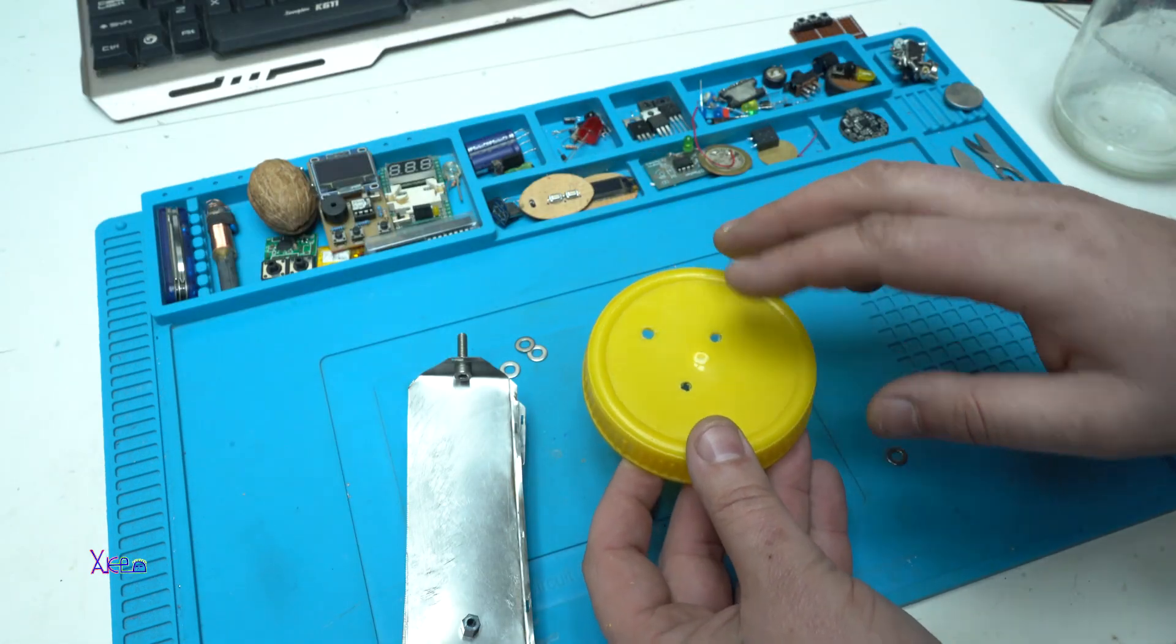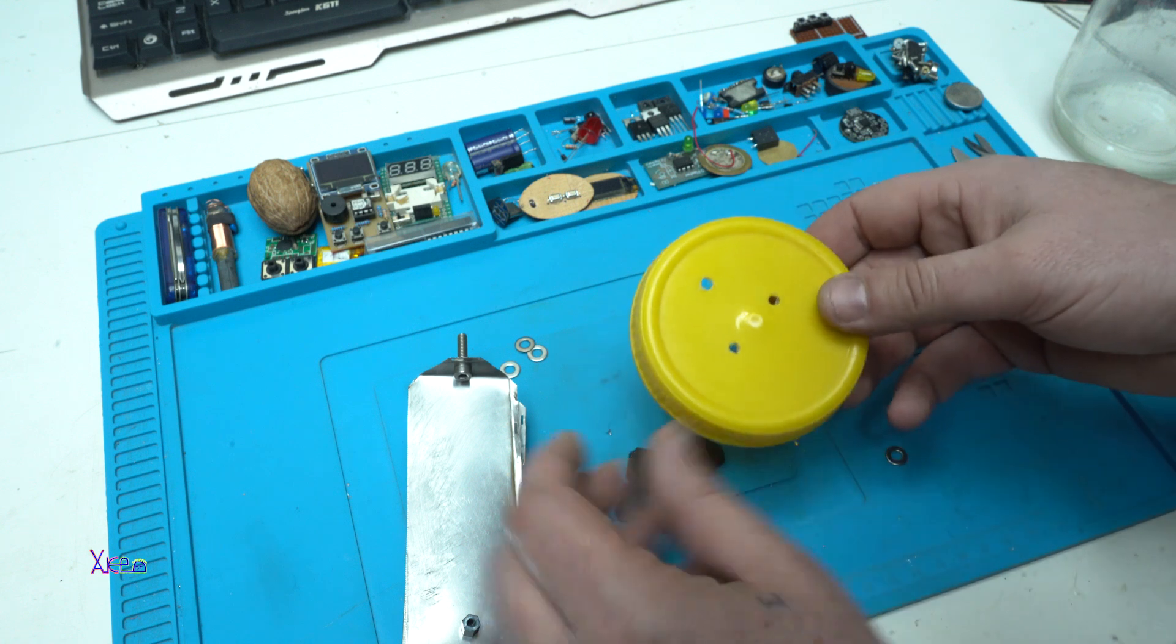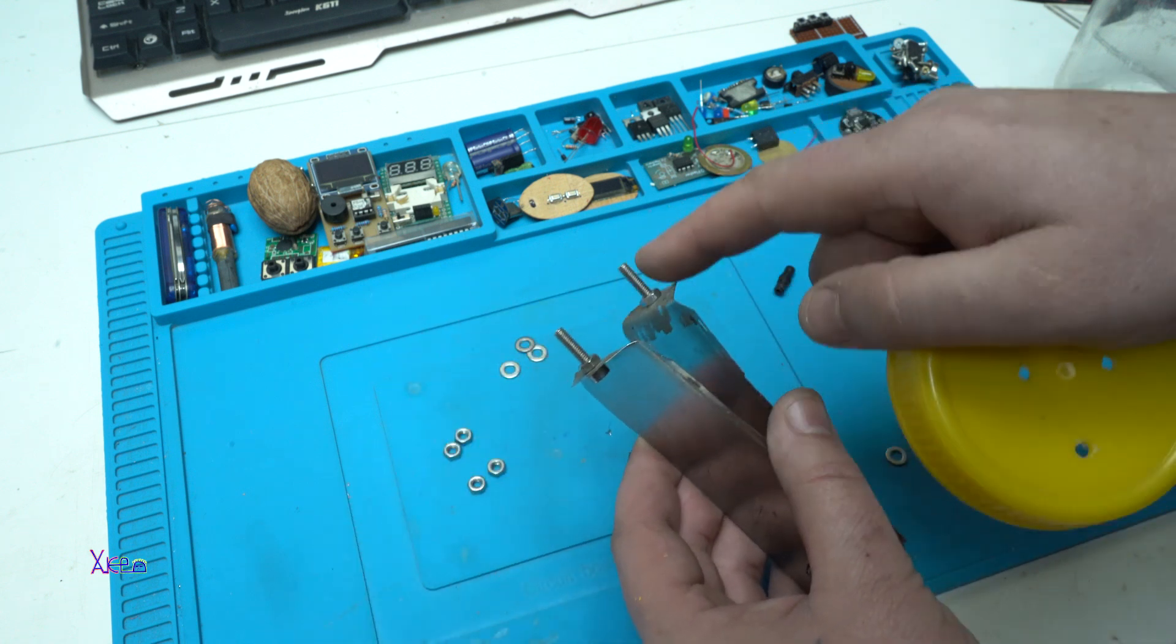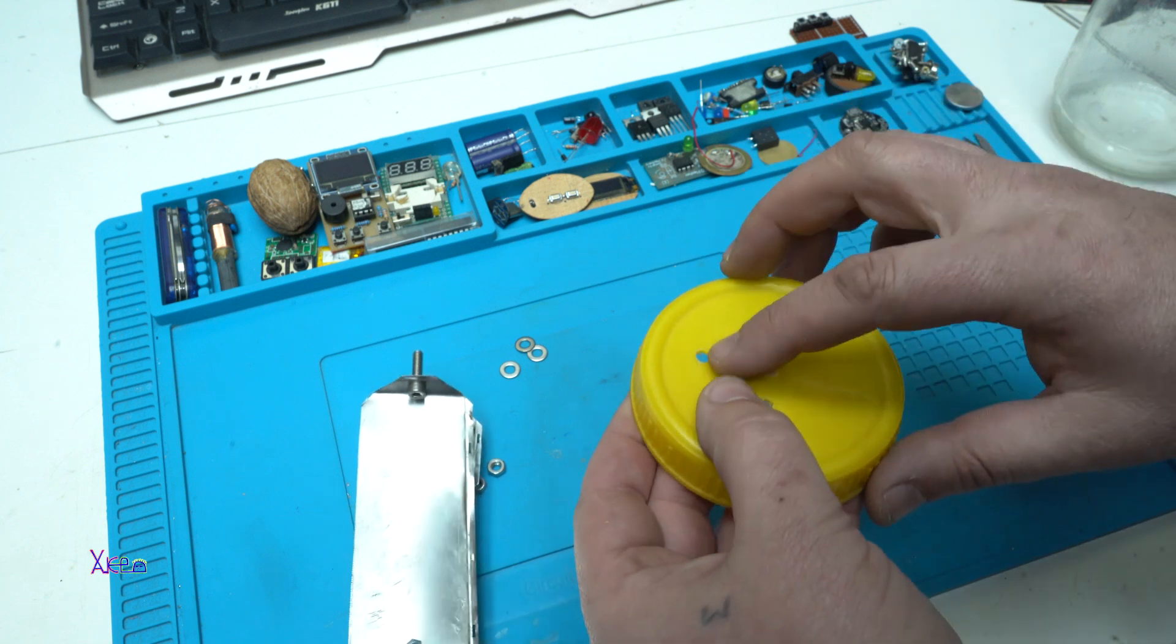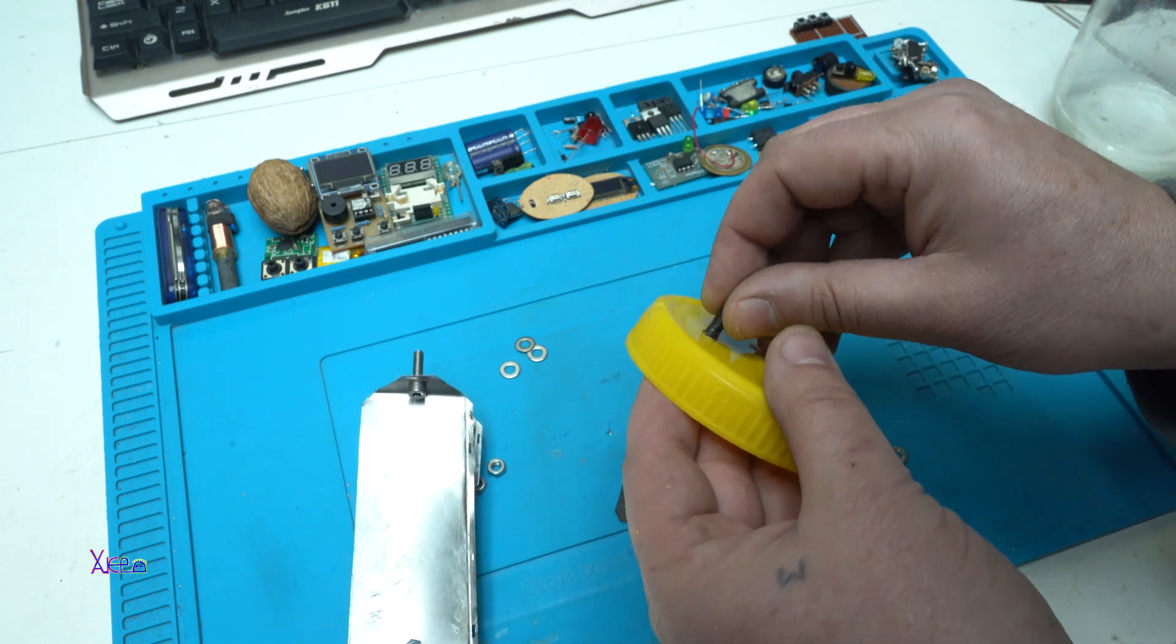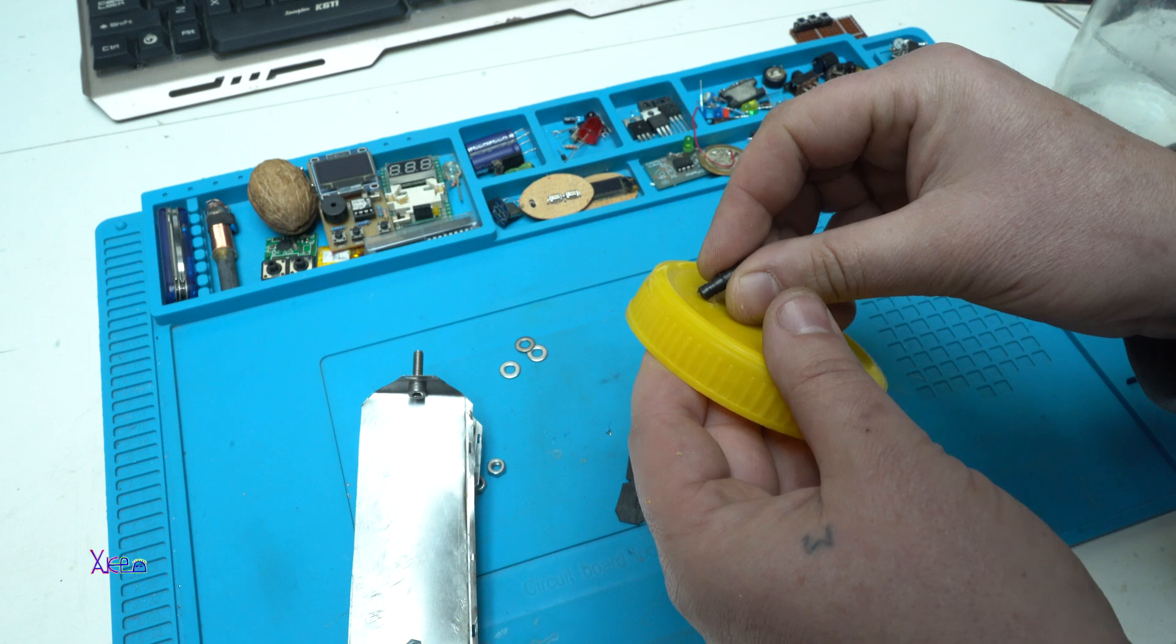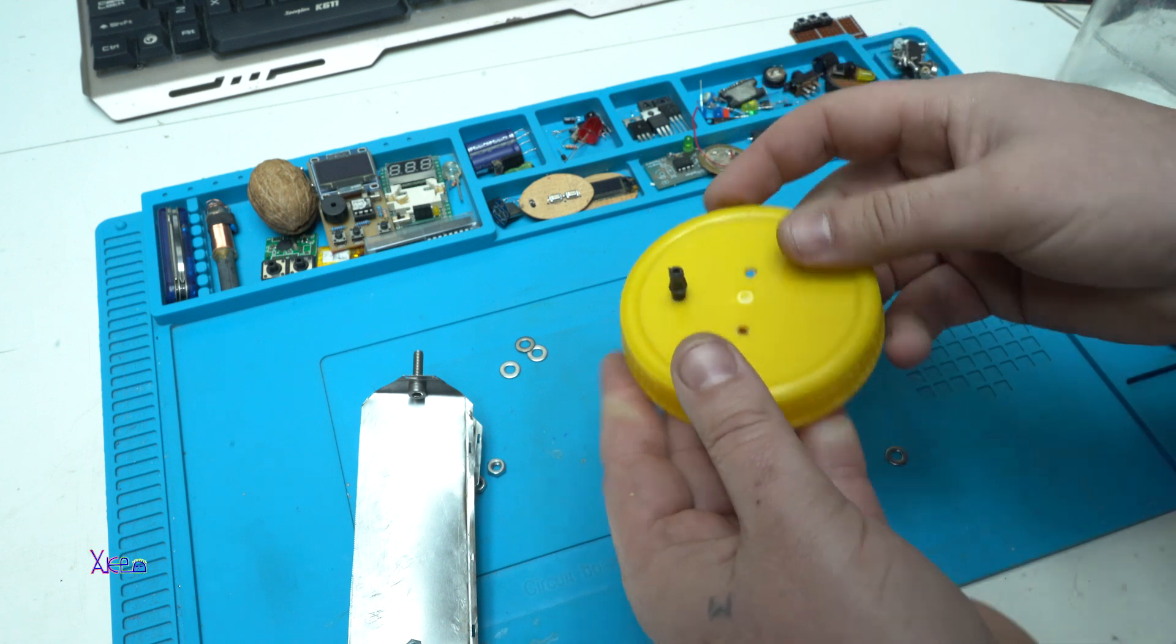On the plastic lid I made three holes, two of them are for these screws and one hole is for out for HHO gas.